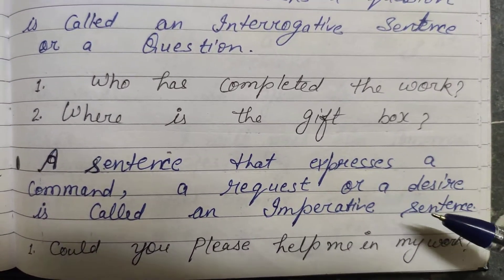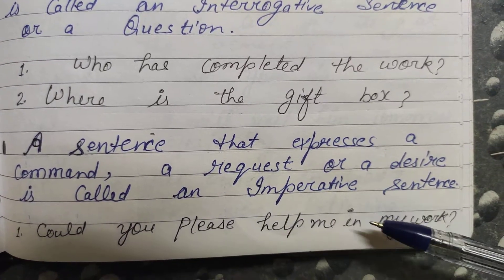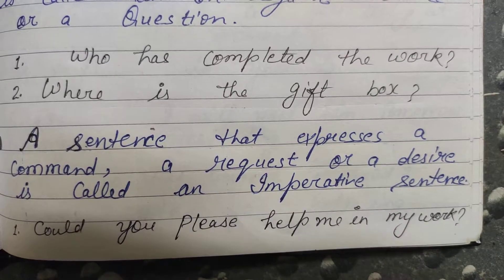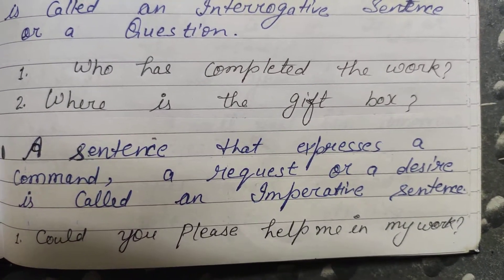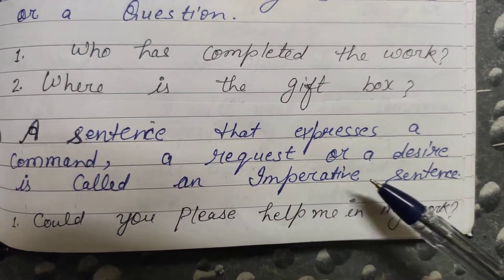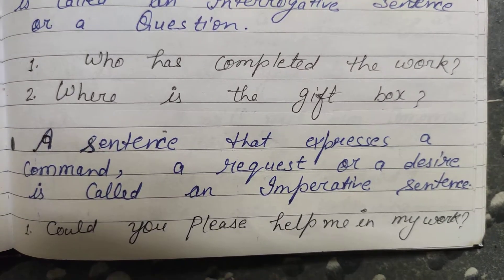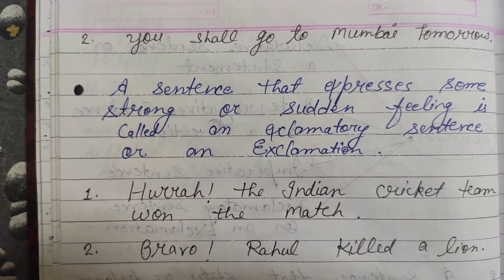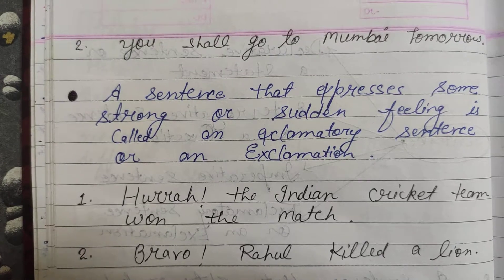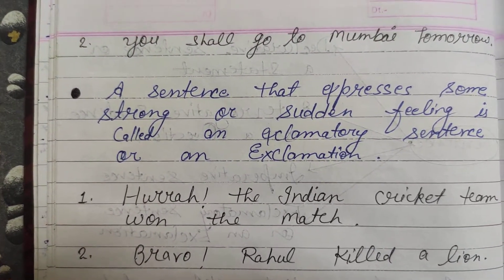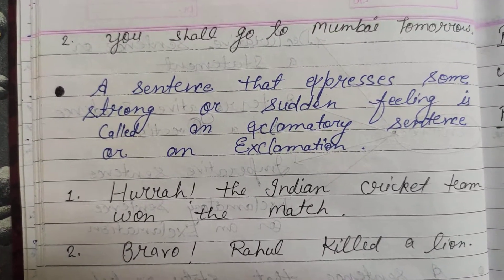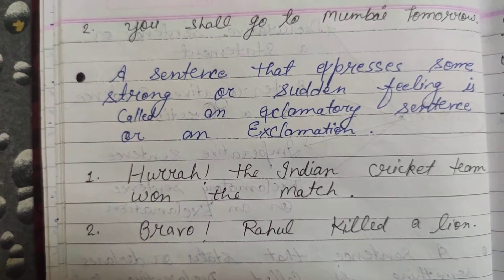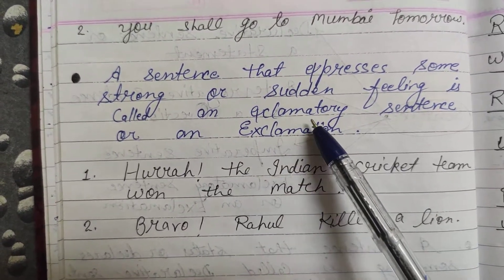'Could you please help me in my work?' — kya aap mere kaam mein madad karenge? Dekho, ye sentence apne aap mein request kar raha hai. Another example: 'You shall go to Mumbai tomorrow.' — is tarike ki sentence mein desire pesh ki jaati hai. Such kinds of sentences come in the imperative category.